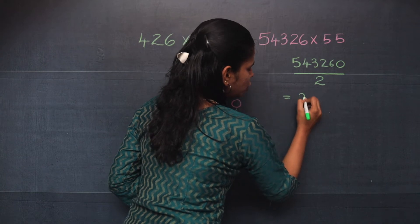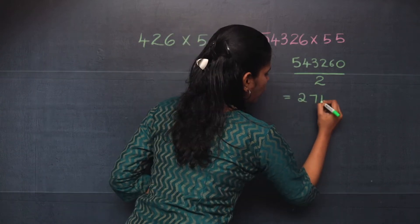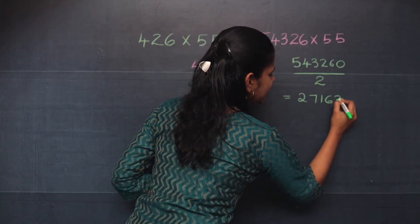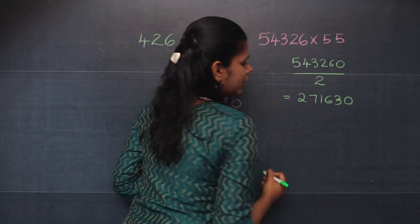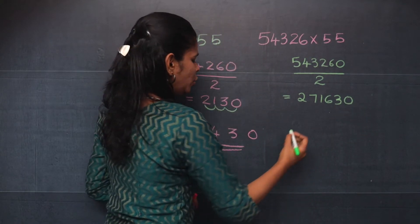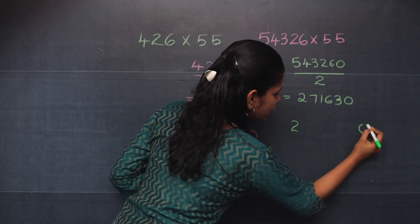You will get 2, 7, 1, 6, 3, 0. Now you will write 2 here and 0 here.